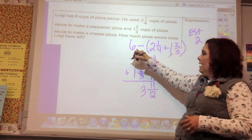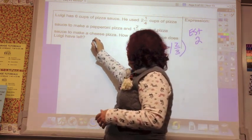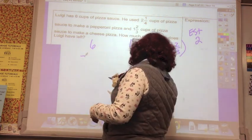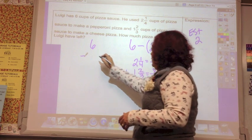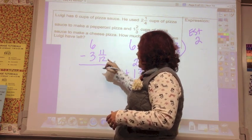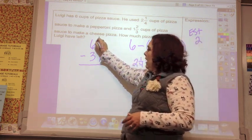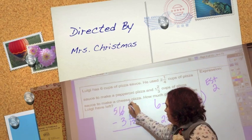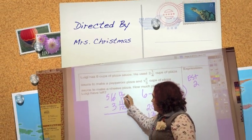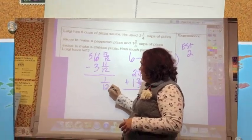Now I have a whole number minus a mixed number. So I've got six minus three and eleven-twelfths. Now I can't take this from nothing, so I have to turn this into a five, and this is twelve-twelfths. Twelve minus eleven is one-twelfth, and five minus three is two.